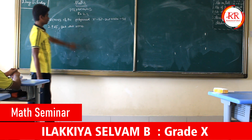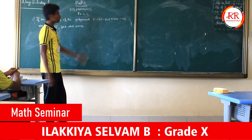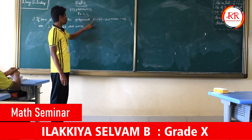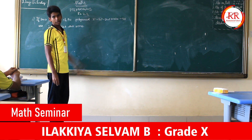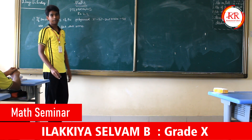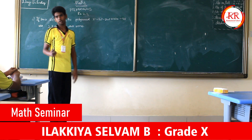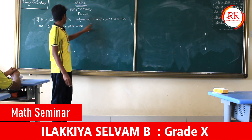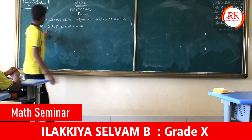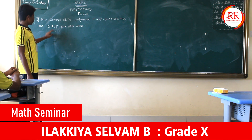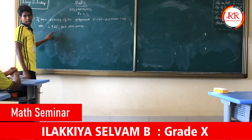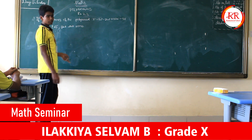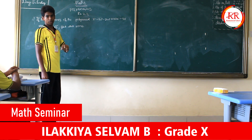First of all we have to know what type of polynomial this is. This is a biquartic polynomial, so we get 4 solutions. They have given two zeros as 2 plus root 3 and 2 minus root 3, and we have to find the other two zeros.